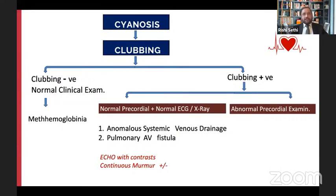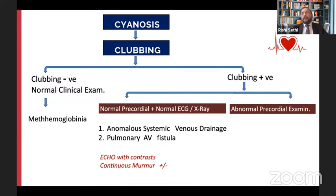If cyanosis is present but clubbing is absent, we are probably dealing with abnormal hemoglobin levels. But if both cyanosis and clubbing are present, we are certainly dealing with some degree of central cyanosis or cyanotic heart disease. The first question to address is whether the precordial examination is normal. If you have a normal precordial examination, normal ECG, and normal x-ray with central cyanosis and clubbing, we are dealing with something like anomalous systemic venous drainage of SVC to LA, pulmonary AV fistulas, or an extracardiac shunt.